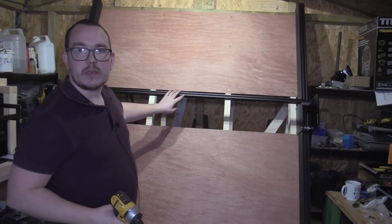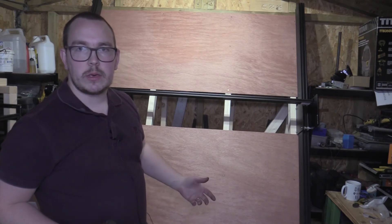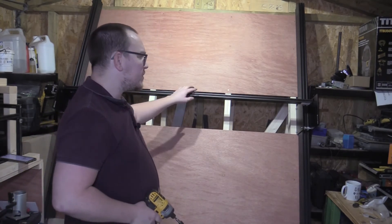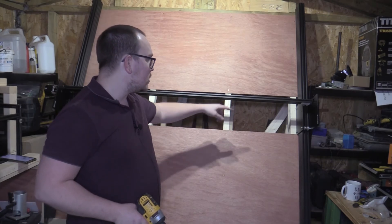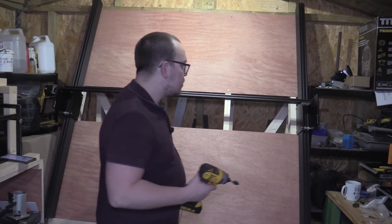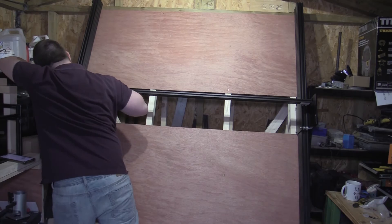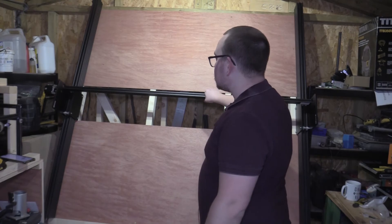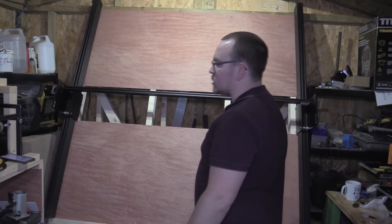This part that I've put in now that spans across on the gantry is probably just to carry the cable chain, the energy chain. I'll have to think about how that's going to work because gravity is obviously going to want to pull the chain this way. Might be that I need to make some sort of guide to keep it on that top side. So that's pulled it together quite nicely. I'm guessing the next thing to do is put the Y-axis extrusion in.